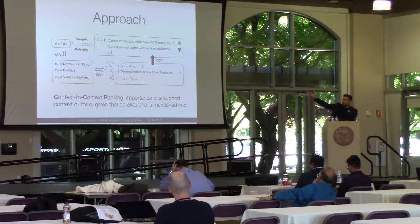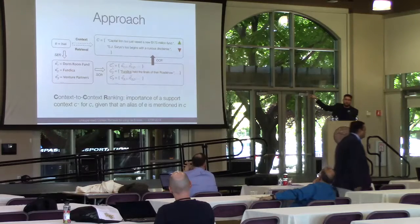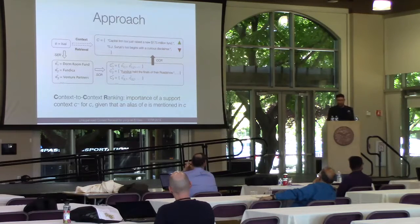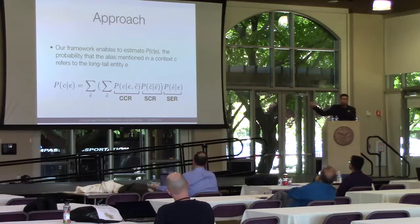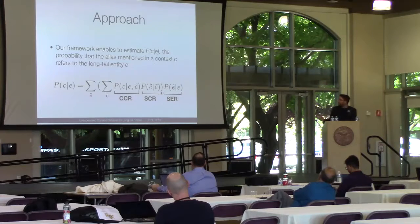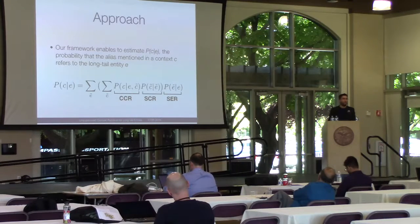We take a path from left to right, but first take a detour to support entities and support contexts, and then back. This whole approach is captured in a probabilistic framework. I want to highlight the three main components and the two summations: the first summation is over the supporting entities, and the second is over the supporting context. This is something you can control — how many supporting entities and how many supporting contexts to incorporate.